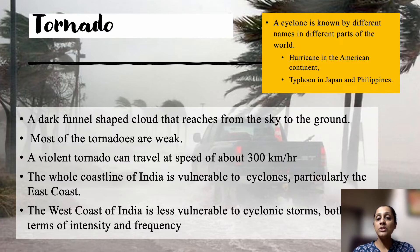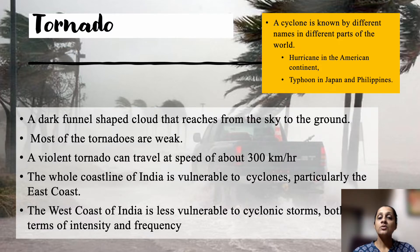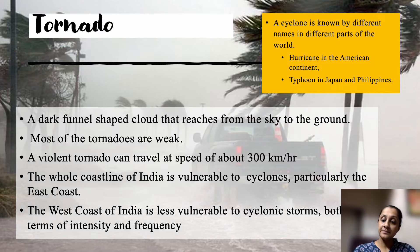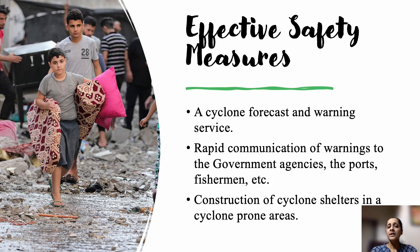The Indian peninsula has a very large coastline, with a west side and an east side, making it very prone to cyclones. Especially the eastern part of the country near the Bay of Bengal is highly vulnerable. The west coast is less vulnerable to cyclonic storms, though there are still cyclonic storms near the Konkan coast and the Kutch coast.